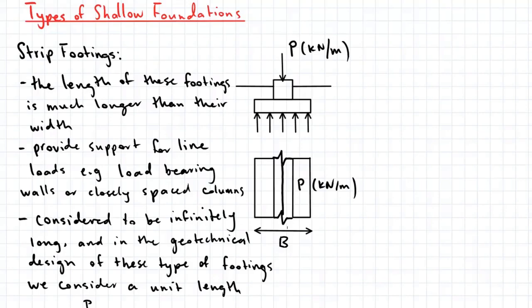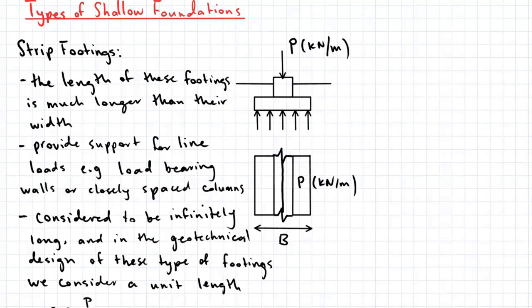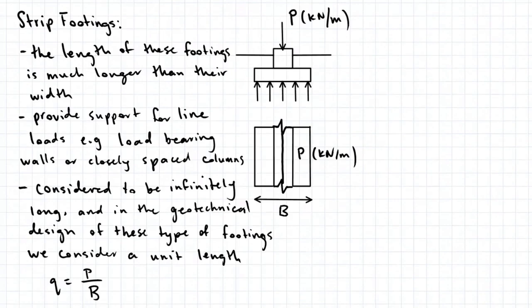In geotechnical design, strip footings are considered to be infinitely long, so we consider a unit length. The pressure beneath the footing is found by dividing the compressive load by the area of the footing, which is the base multiplied by unit length.